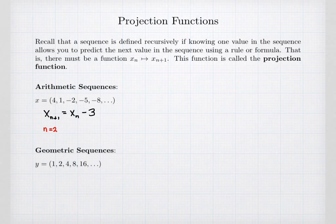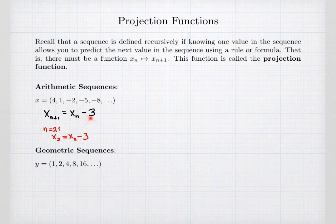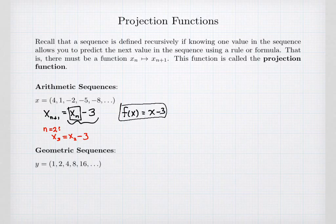For example, if I use n equals 2, that tells me x_3, because that's 2 plus 1, is equal to x_2 minus 3. So the third value, which is negative 2, equals 1 minus 3. Interpreting this as a projection function: my input is the original value, and my output is that input minus 3. That is the projection function for my first sequence.